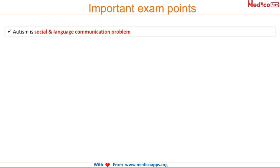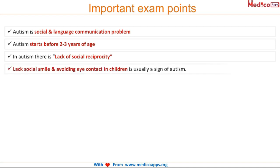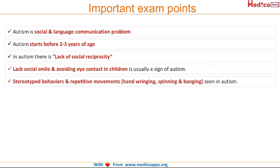Important exam points: autism is a social and language communication problem. It usually starts around 2 to 3 years of age. There is a lack of social reciprocity, lack of social smile, and avoiding eye contact in children. There are also stereotyped behaviors and repetitive movements including hand wringing, spinning, and banging.